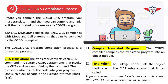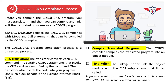In step two, the COBOL compiler compiles the translated code into an object module. And finally, in step three — link edit — the linkage editor links the object module with the CICS sub-program that it has called.